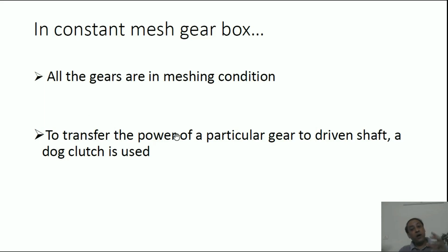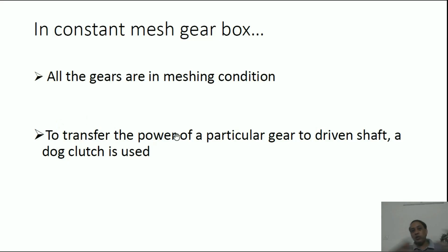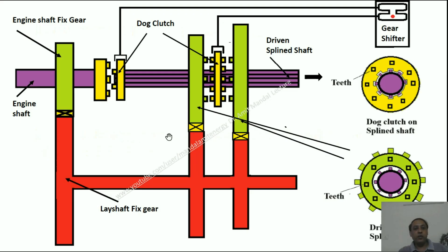To transfer the power of a particular gear to the driven shaft, a dog clutch is used. All the gears remain in meshing condition, and the dog clutch is used to select which gear combination's power we want to transfer to the driven shaft.